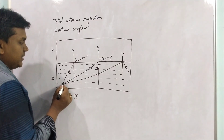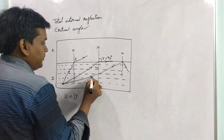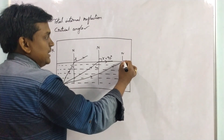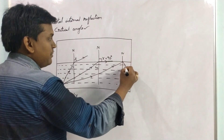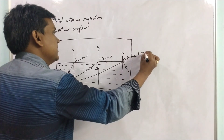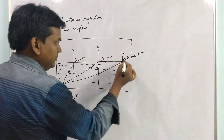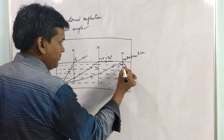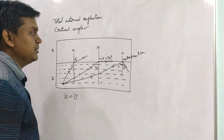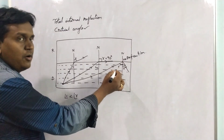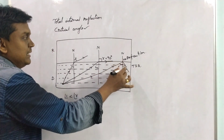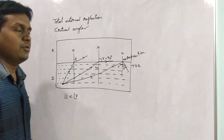Now consider a third ray from the source travelling from the denser medium towards the rarer medium. But here it does not refract into the rarer medium — it comes back again into the denser medium. So there is no refraction; the ray returns into the denser medium. This is the angle of incidence and this is the angle of reflection. We call this situation total internal reflection, because the reflection takes place completely internally.